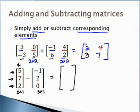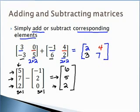For the element in the first row, first column, we take five minus negative one. Second row, first column: seven minus two. Third row, first column: two minus zero. Note that if you switch the order — taking the second matrix minus the first — you won't get the same result. You'd have to switch the order of subtraction.